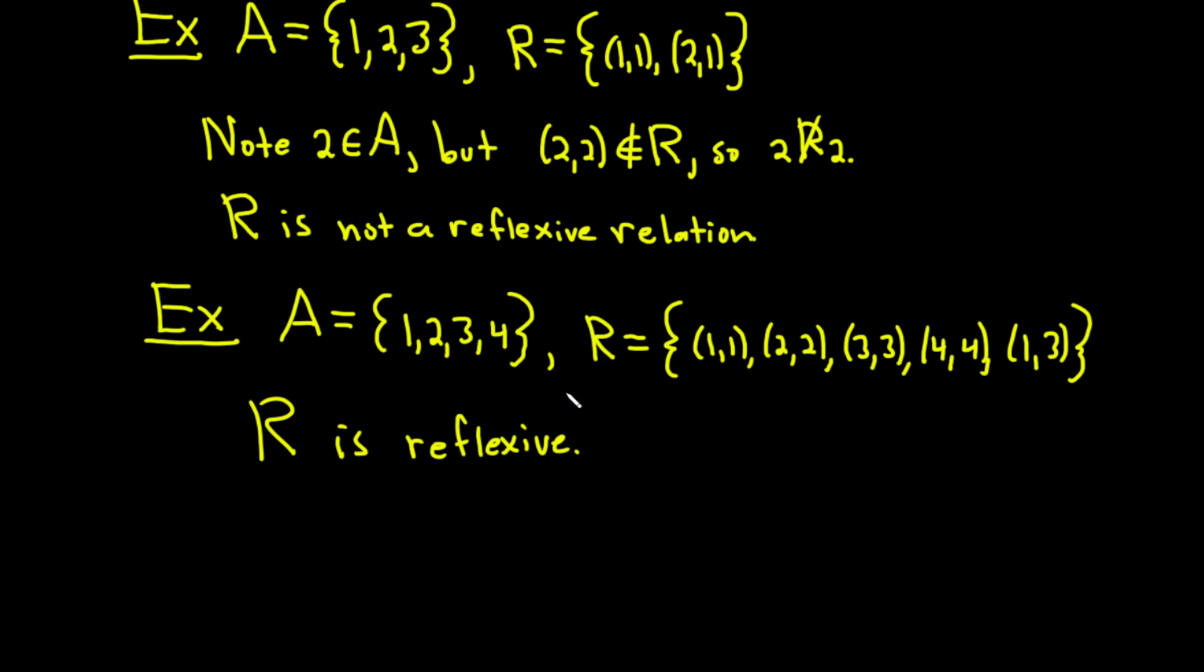Because every element is related to itself, right? (1,1) is in R means that 1 is related to 1, etc. So here it failed because this set did not contain (2,2). Let's do one more example.